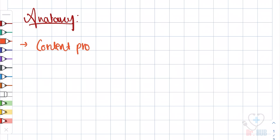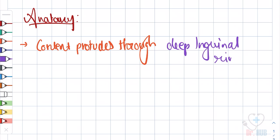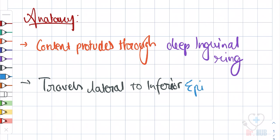The content protrudes through the deep inguinal ring and travels lateral to the inferior epigastric vessels.